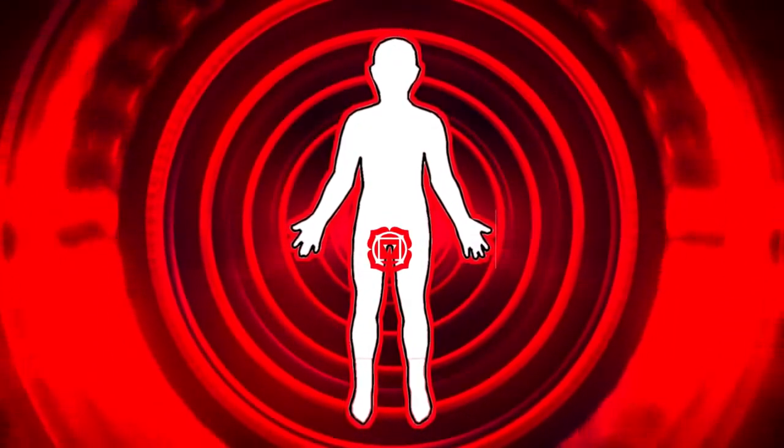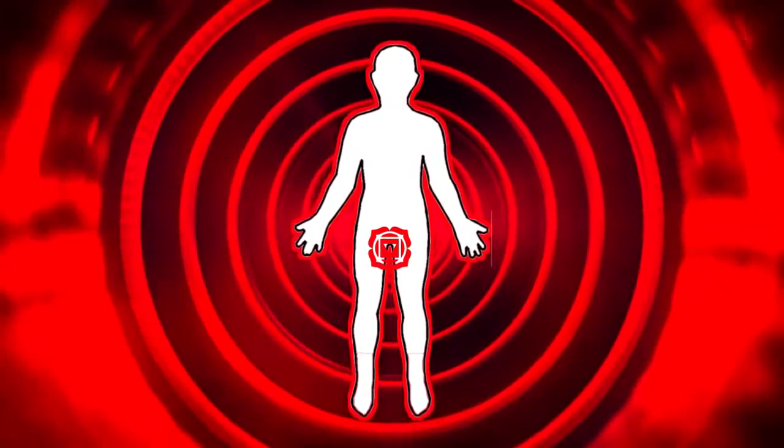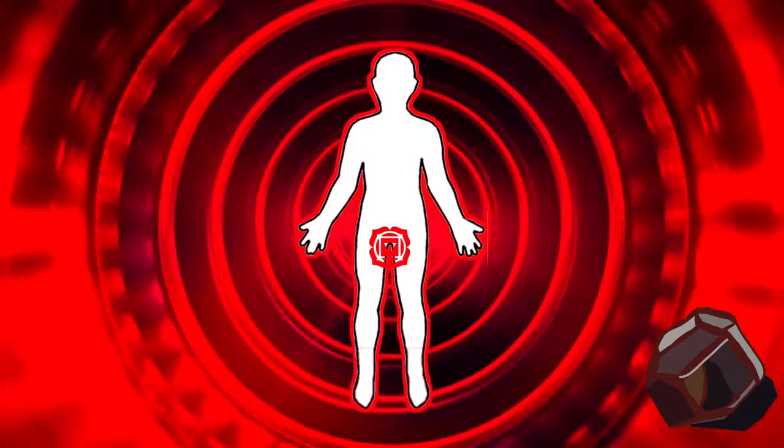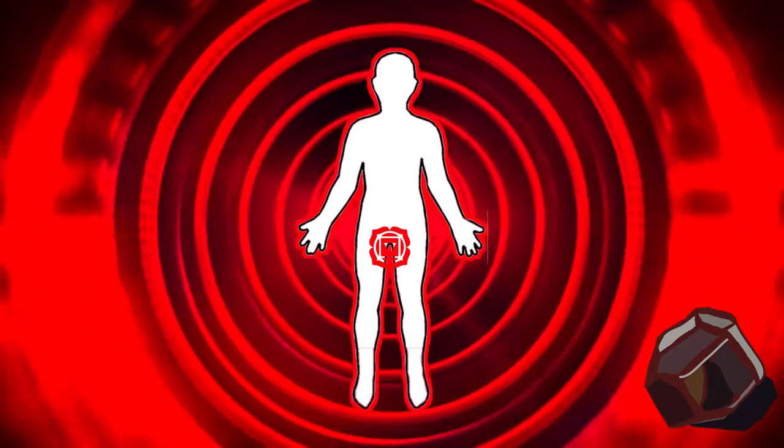By opening and balancing our root chakra, we allow the other chakras to thrive. If you have a garnet crystal or another crystal associated with the root chakra, hold it or keep it close during this meditation. This meditation will help you balance and open your root chakra.